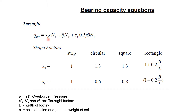sc and s_gamma are shape factors depending upon the type of the footing. If there is a circular footing, the parameters are different; if there is a square, the parameters are different; if there is a rectangular footing, the parameters are different. For a rectangle, you put in the width and length of the footing to get sc and s_gamma.